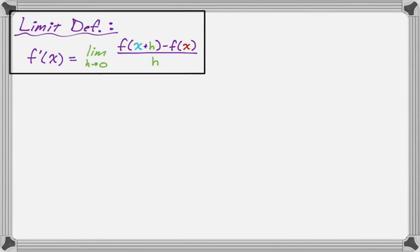First we need to know what the limit definition says. It says that f'(x), the derivative as a function of x, is the limit as h approaches 0 of [f(x+h) - f(x)]/h. That's the difference quotient you might be familiar with. I'm color coding things to make it easier. We're going to use this definition on this function to find the derivative.